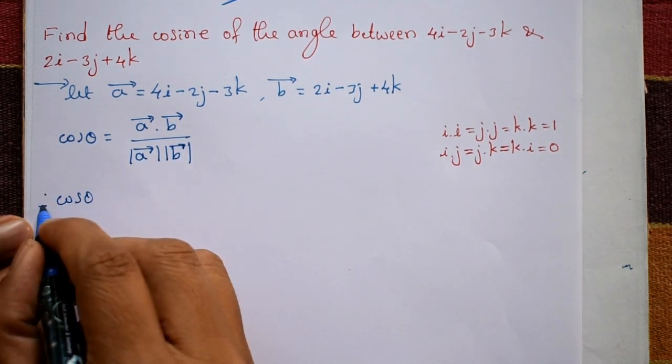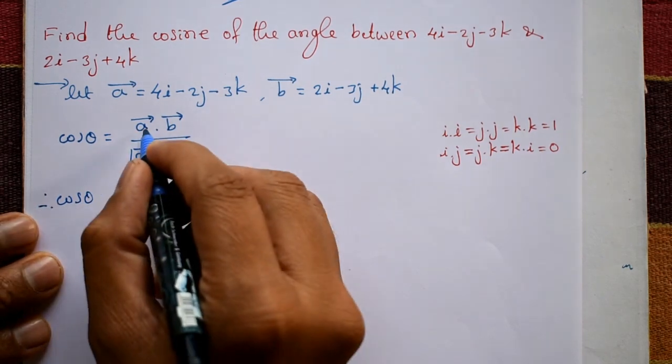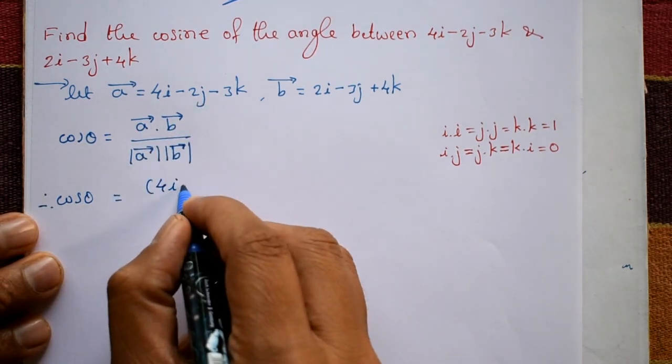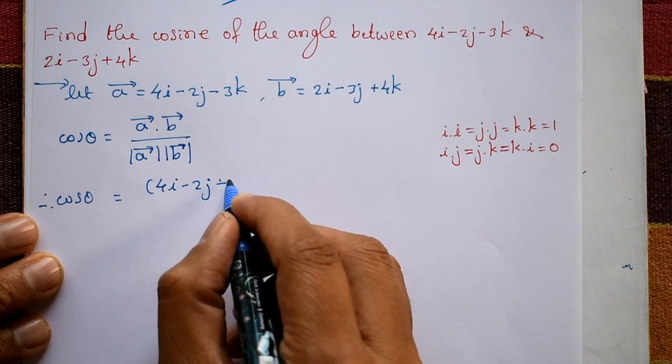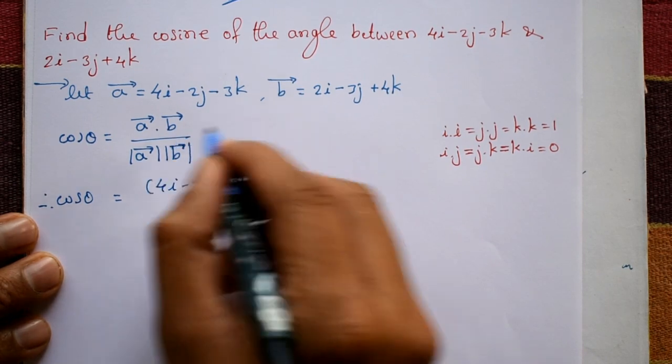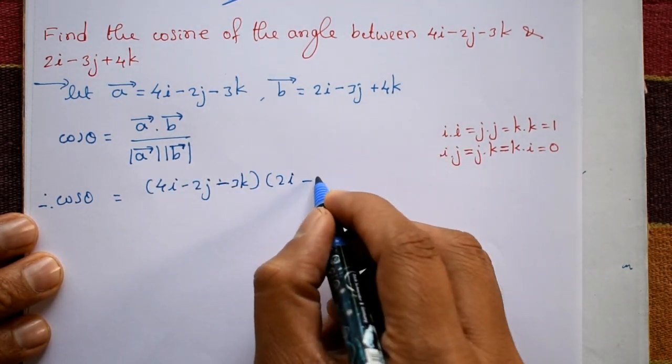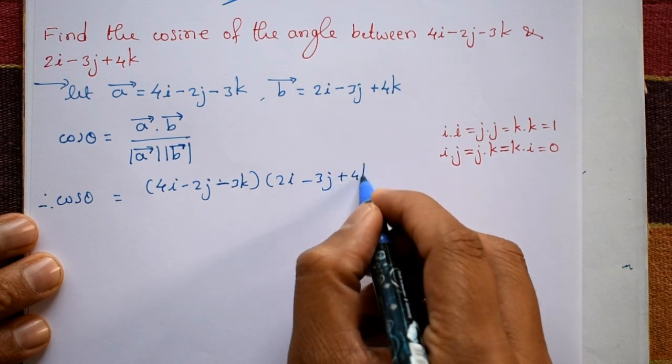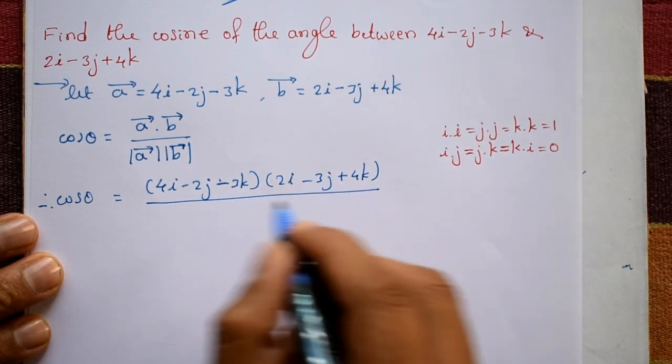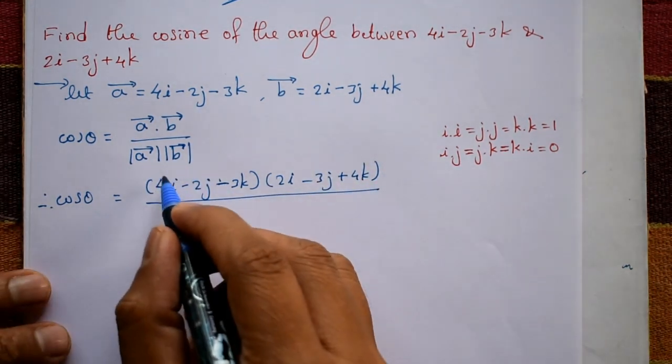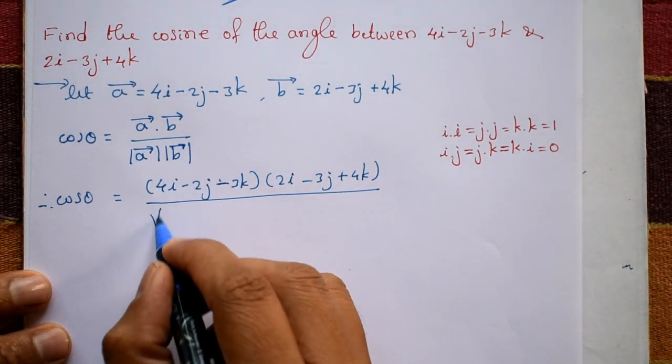Therefore, cos theta is equal to vector a, which is 4i minus 2j minus 3k, into vector b, which is 2i minus 3j plus 4k, divided by magnitude of vector a.